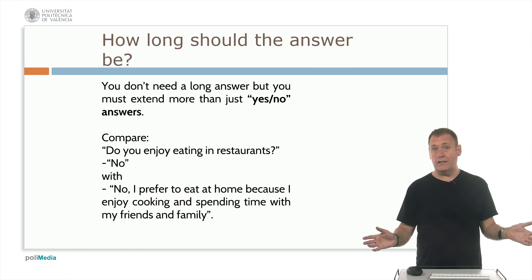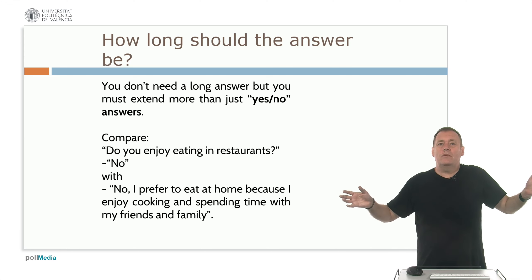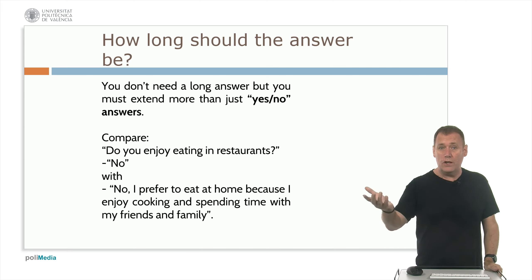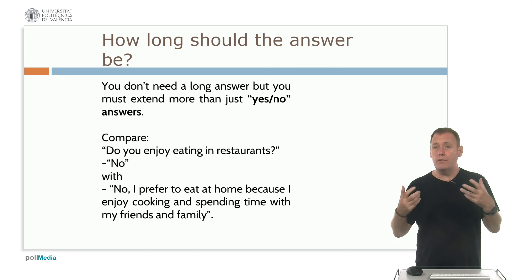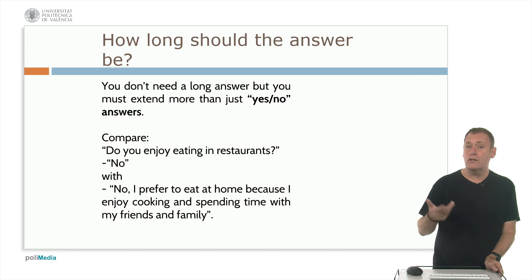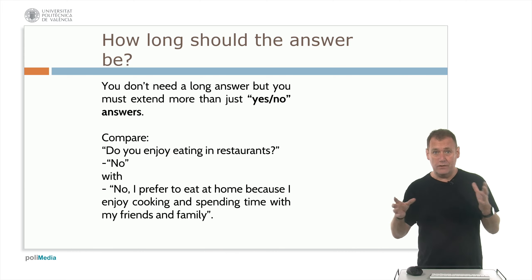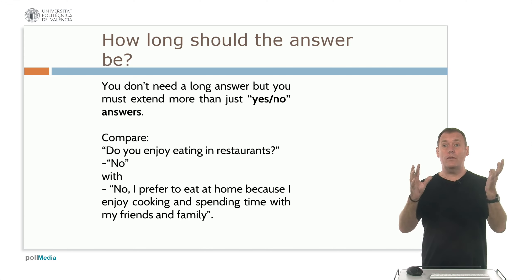About extension: you don't need a very long answer, but you must extend further than just 'yes', 'no', 'blue', 'green'. For example, if they ask 'Do you enjoy eating in restaurants?' and you just say 'No', that won't get you any marks because you haven't shown any language. Instead say: 'No, I prefer to eat at home because I enjoy cooking and spending time with my friends and family.' Here you've extended, given an example, used different tenses, and you're giving them more language to assess you on — which is what you want. You want to show them your C1.